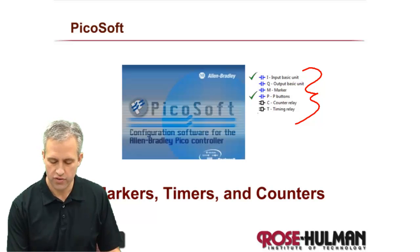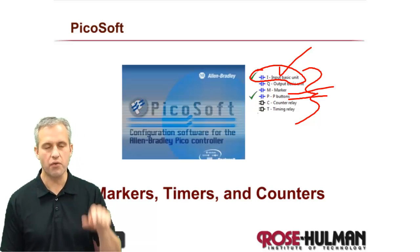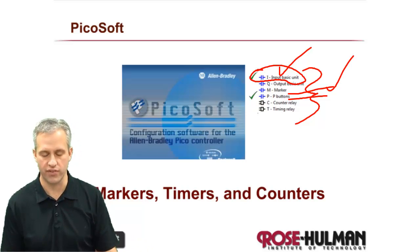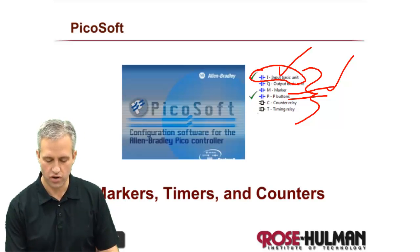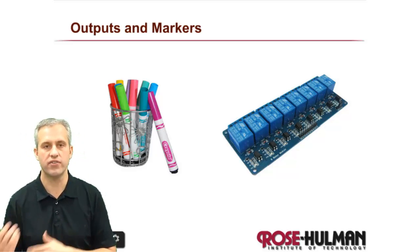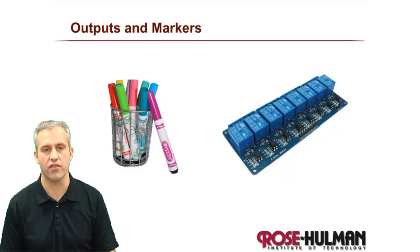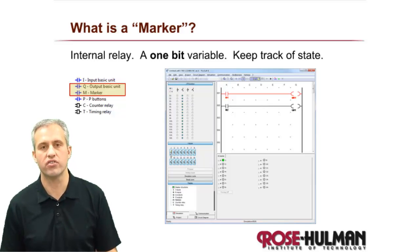We know all there is to know about inputs, and push buttons — those little buttons on top — are just a different type of input, so we know those too. We're going to start learning about these other elements, starting with markers. Markers are actually very similar to outputs, so I've associated markers and outputs together. It turns out we've only scratched the surface of what markers and outputs can do.